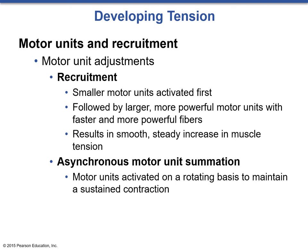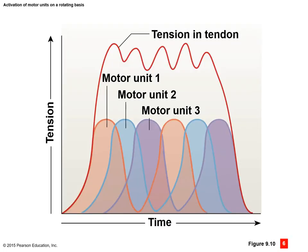For sustained muscular contraction, we have asynchronous motor unit summation, where motor units are activated on a rotating basis to maintain a sustained contraction and help prevent fatigue. Motor unit 1 fires, then motor unit 2, then motor unit 3, then back to motor unit 1, and so on. By activating these units over time on a rotating basis, the muscle is able to maintain greater overall tension without fatiguing.